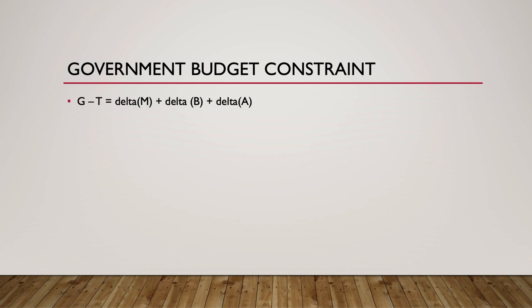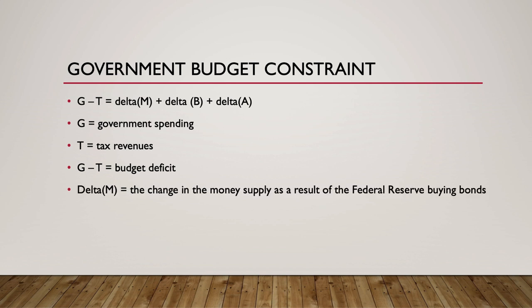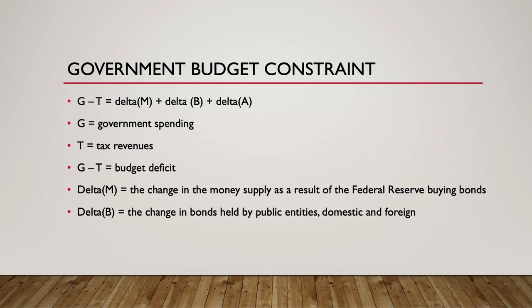A government budget constraint is given by the following formula: G minus T equals delta M plus delta B plus delta A, where G is government spending, T is tax revenues, G minus T is the budget deficit, delta M is the change in the money supply as a result of the Federal Reserve buying bonds, delta B is the change in bonds held by public entities — domestic and foreign — and delta A is the sale of government assets. The main idea is that the dollars used in deficit spending must come from somewhere, either from borrowing or from the sale of assets.